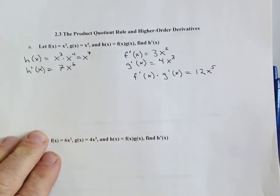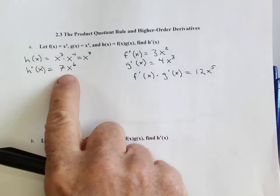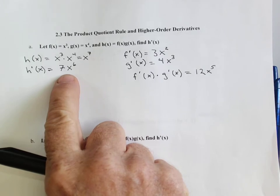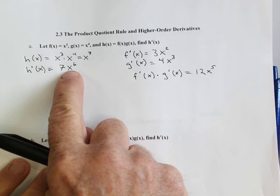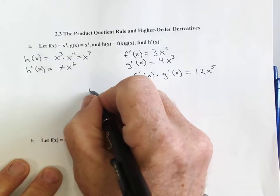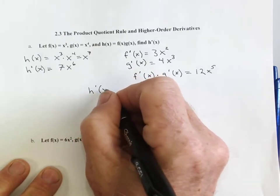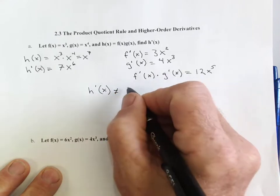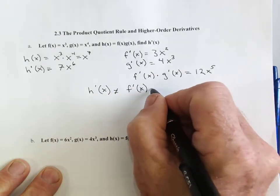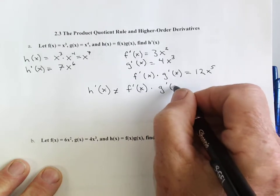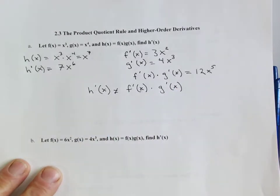Now, Alexis, I said this was the answer, correct? Yes. Is this the same as this? No. No. So, the derivative of h does not equal the product of the derivative of f times the derivative of g. They don't equal each other.